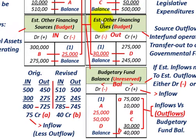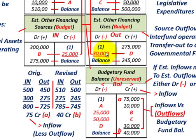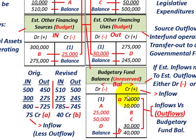Now let's look at our estimated other financing uses — the source outflows for interfund operating transfers out to other governmental funds. We're sitting at $275,000 and we're going to reduce it by $30,000, ending up with a balance of $245,000. We debit estimated other financing uses by $30,000, so the credit goes to the budgetary fund balance of $30,000. We reduced our outflows by $30,000, so we're increasing our budgetary fund balance by $30,000.